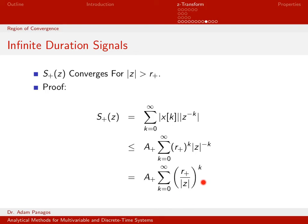I need R plus divided by the magnitude of Z to be less than 1. Multiplying both sides by the magnitude of Z gives R plus less than the magnitude of Z — equivalently, the magnitude of Z is greater than R plus. So this sum converges for all magnitudes of Z greater than R plus.